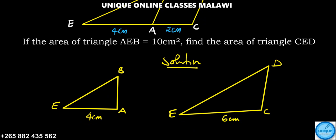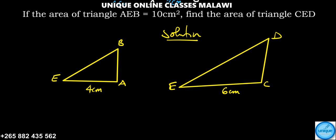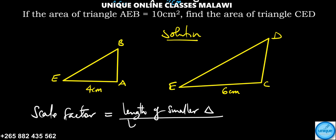So we have that. That's one. Now what you're going to do, we need to find the scale factor. So scale factor is equal to length of a smaller triangle divided by length of bigger triangle.